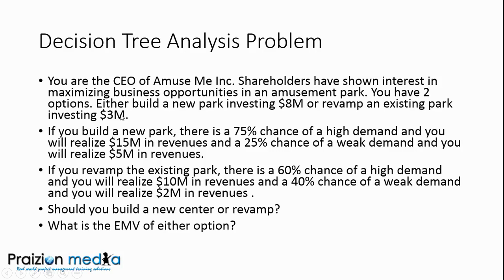If you build a new park, there's a 75% chance of high demand and you realize $15 million in revenues, and a 25% chance of weak demand and you realize $5 million in revenues. If you revamp the existing park, there's a 60% chance of high demand and you realize $10 million in revenues, and a 40% chance of weak demand and you realize $2 million in revenues.